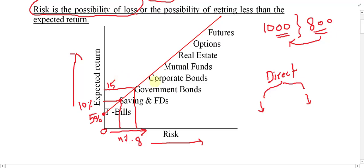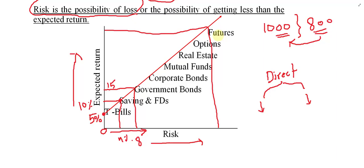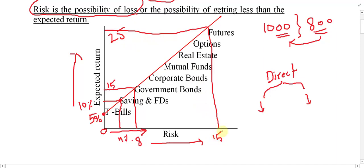To reach the maximum or peak point, we have securities like futures. Futures are a type of security found in forex markets, commodity markets, and other markets, and they are one way of hedging risk. Return of futures might be twenty-five percent or even more, and risk also increases — for example, to fifteen percent. So as much as you move upward, risk and return both increase.